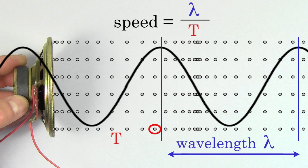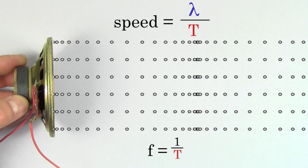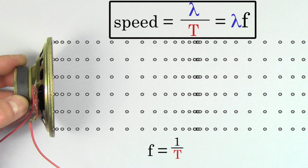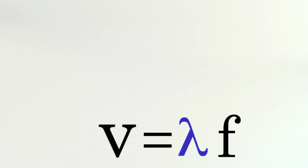Now since speed is defined to be distance per time, the speed of a sound wave has to be the wavelength divided by the period, since the wave is traveling forwards one wavelength per period. Since frequency is defined to be one over the period, we can rewrite this formula as speed equals wavelength times frequency. This formula is accurate for all kinds of waves, not just sound waves, because a wave has to move one wavelength for every period.